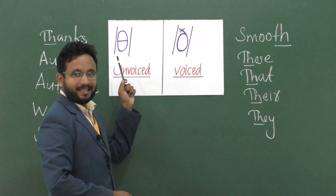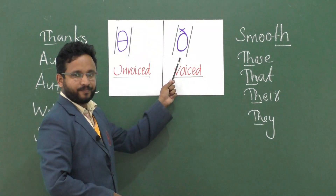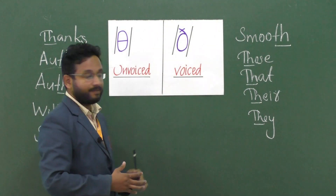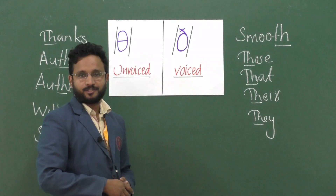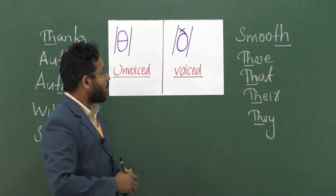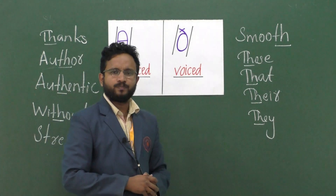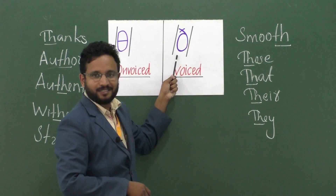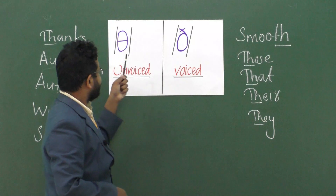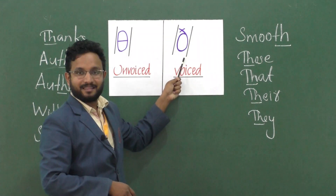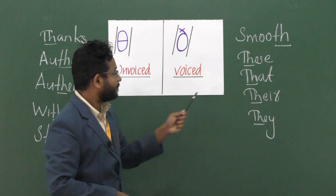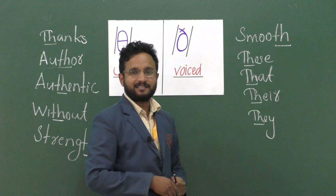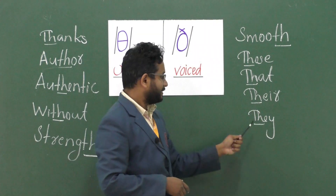If it is th — what is this? It's a pair of sound, right? They are pairs. Now it is smooth — th unvoiced and th voiced. Smooth. Those. That. There. They.